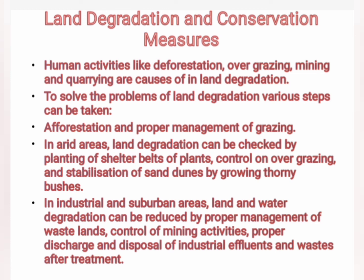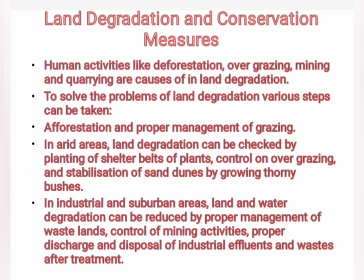Land degradation is an important problem faced by land resources in India. Human activities like deforestation, overgrazing, mining and quarrying are the causes of land degradation. To solve these problems, various steps are to be taken — afforestation and proper management of grazing are very important. In arid areas, land degradation can be checked by planting shelter belts of plants, control on overgrazing, and stabilization of sand dunes by growing thorny bushes. In industrial and suburban areas, land and water degradation can be reduced by proper management of wastelands and control of mining activities, and proper discharge and disposal of industrial effluents and wastes after treatment.